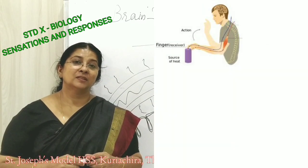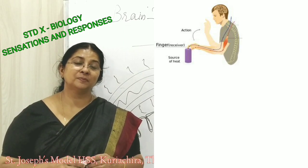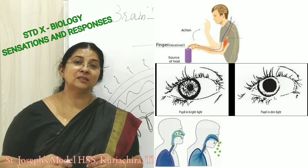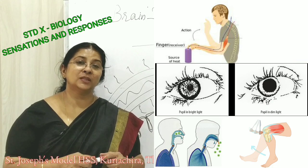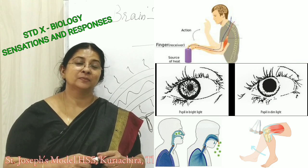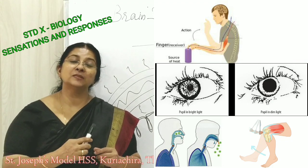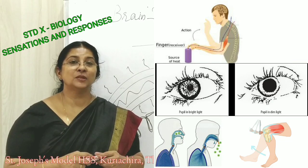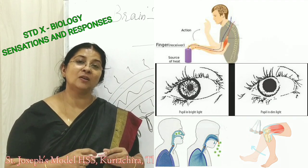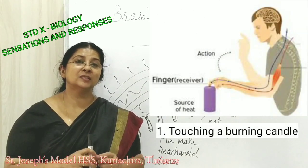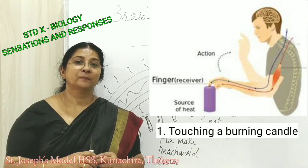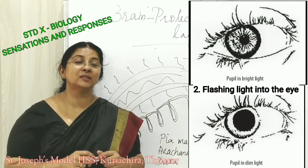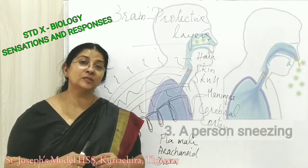Four examples are shown here: touching a hot burning candle, flashing light into the eye, a person sneezing, and hitting the knee with a hammer. What is common in all these examples? There is a stimulus. In the first case, heat is the stimulus. In the second, intense light is the stimulus. In the third, the person may have sniffed dust or pollen grains. In the last, hitting the knee creates pressure as the stimulus.